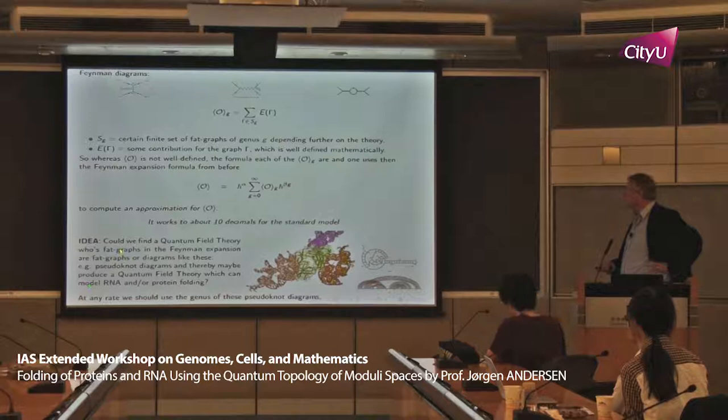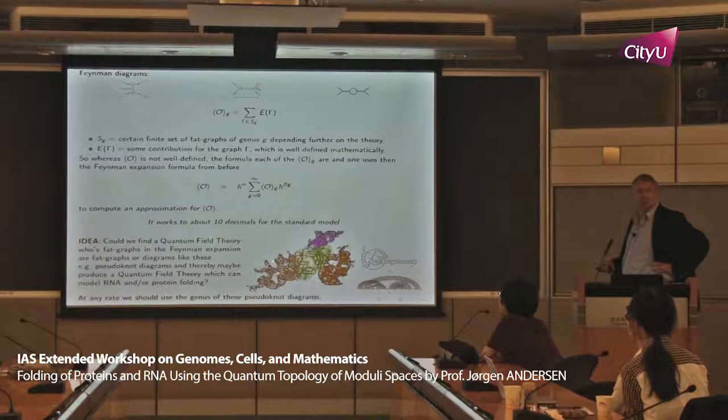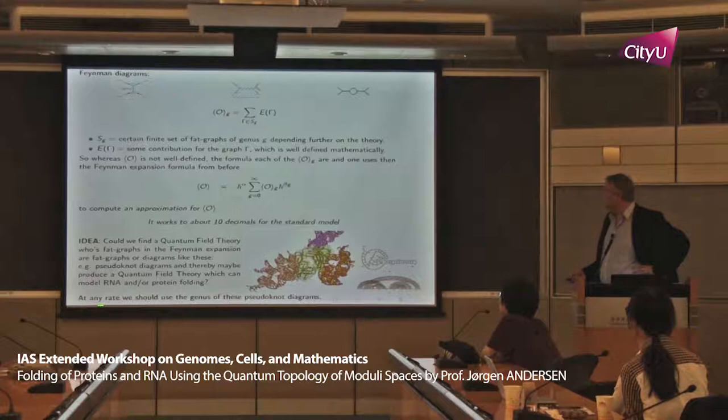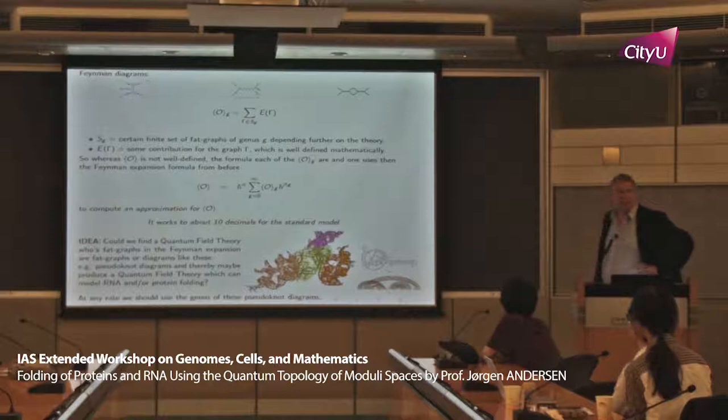The idea we want to take away from this: could we find a quantum field theory whose fat graphs in the Feynman expansion are diagrams like RNA pseudoknot diagrams? Could we produce a quantum field theory that can model RNA and protein folding? All I want to learn right now is that there is a genus associated to such a pseudoknot diagram.